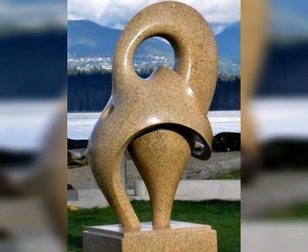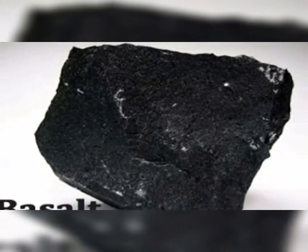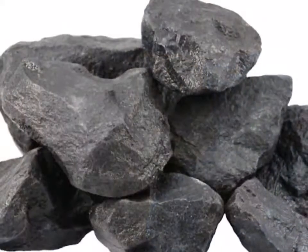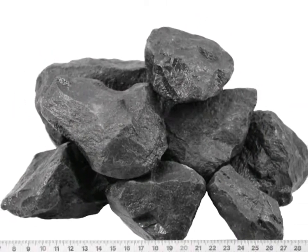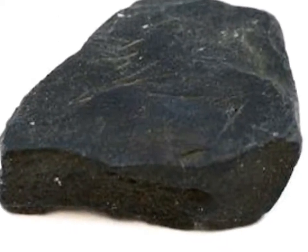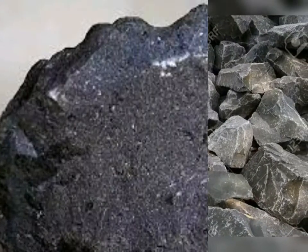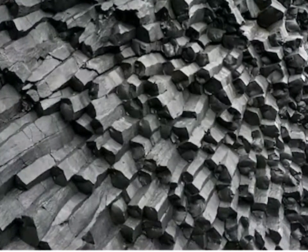Basalt is also an igneous rock with fine-grained minerals and a very shiny and glossy appearance. It is formed when volcanic lava immediately cools and hardens quickly above the surface of the Earth. Unlike granite, which cools slowly, basalt cools very fast. When it comes in contact with the outer air temperature it immediately hardens. Basalt is a very dark colored rock used mainly in construction purposes.